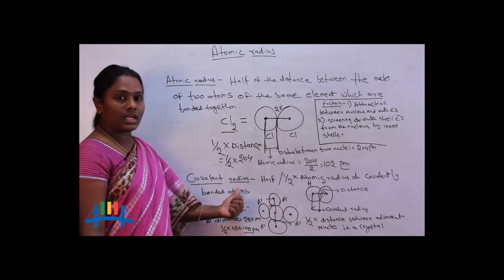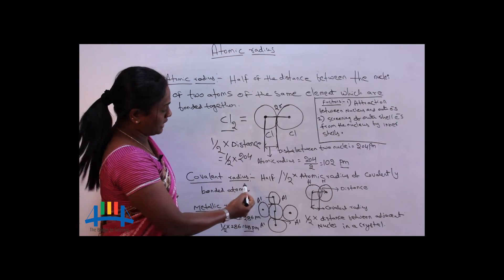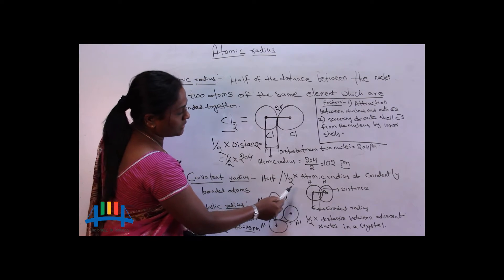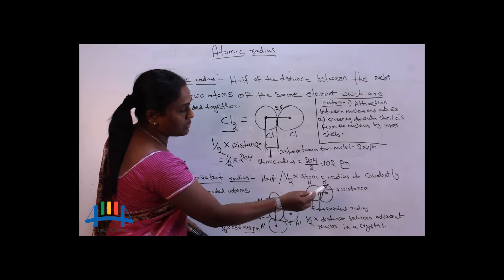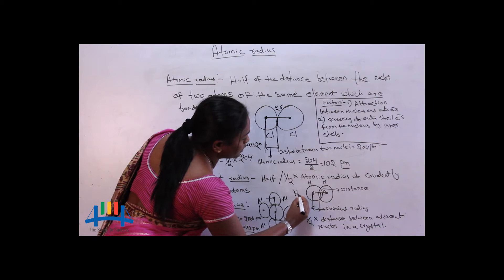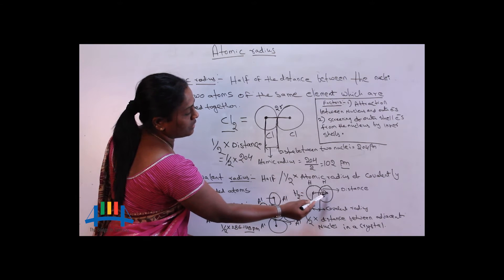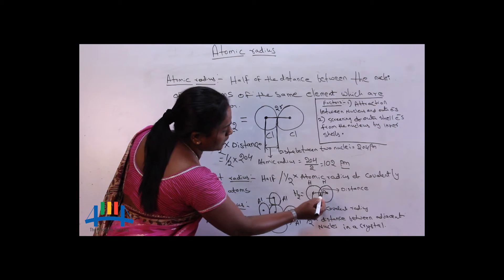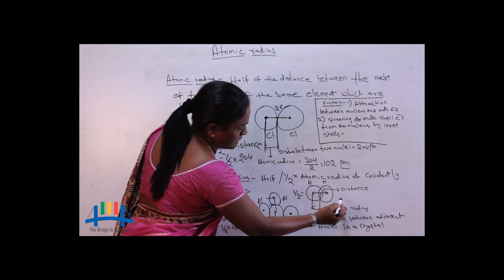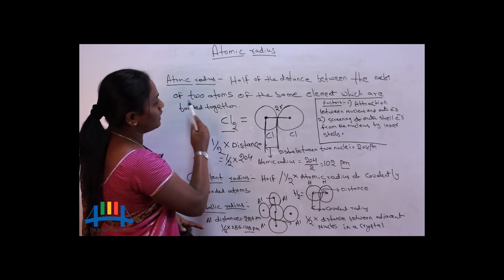Now let's come to covalent radius. Covalent radius is exactly the same as atomic radius — it is half of the distance between the two nuclei of two atoms which are covalently bonded. For example, take the H₂ molecule. This is the nucleus of one hydrogen atom and this is the nucleus of another hydrogen atom. These two mutually exchange their electrons to form a covalent bond, and the half of that internuclear distance is called the covalent radius. It is exactly like atomic radius.